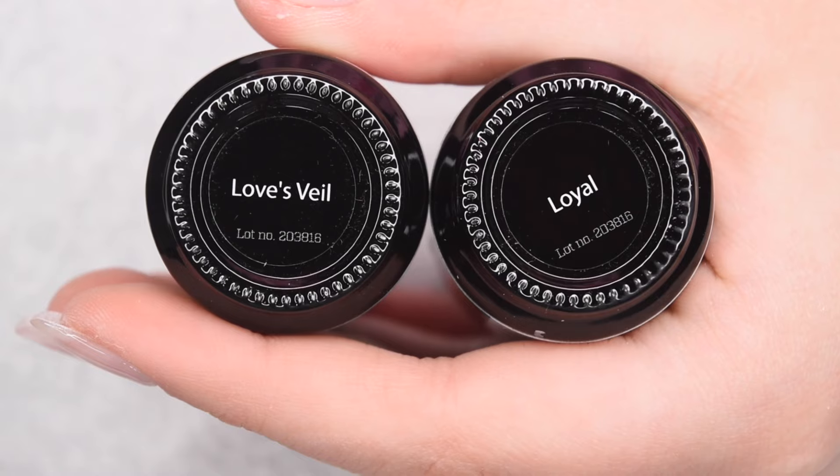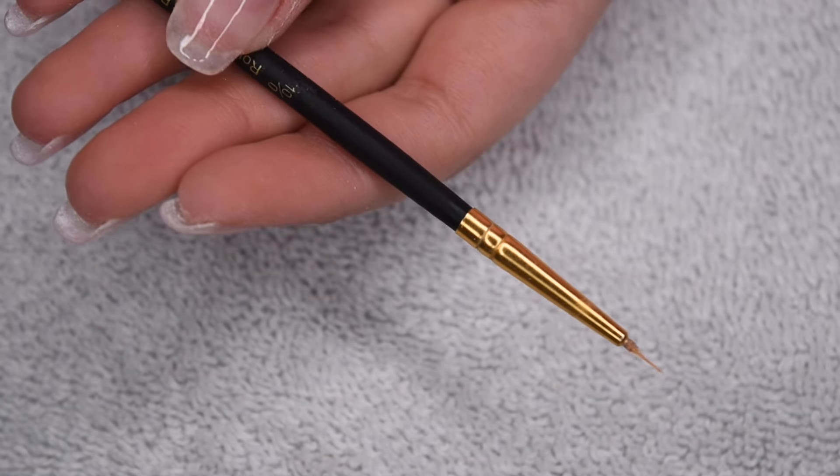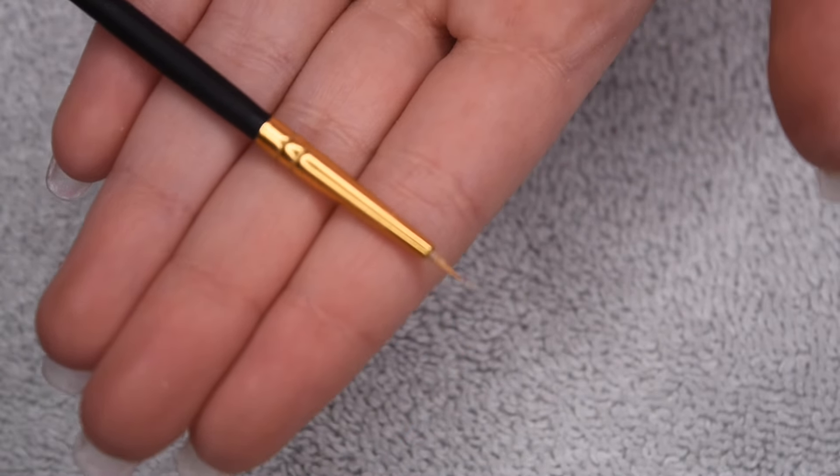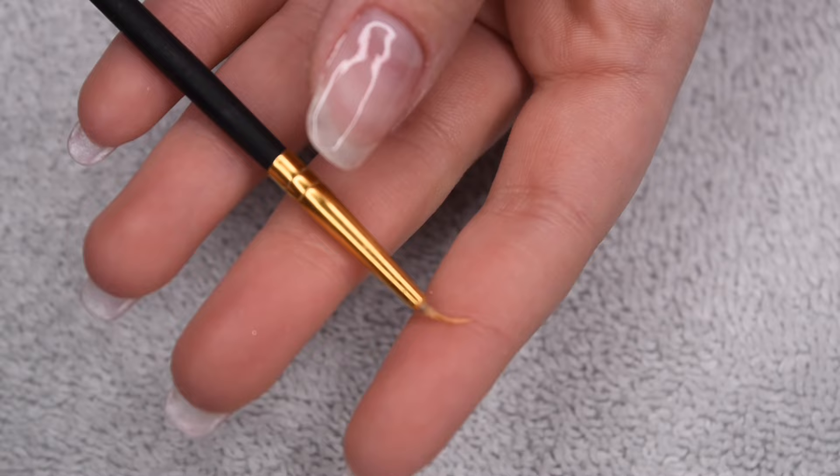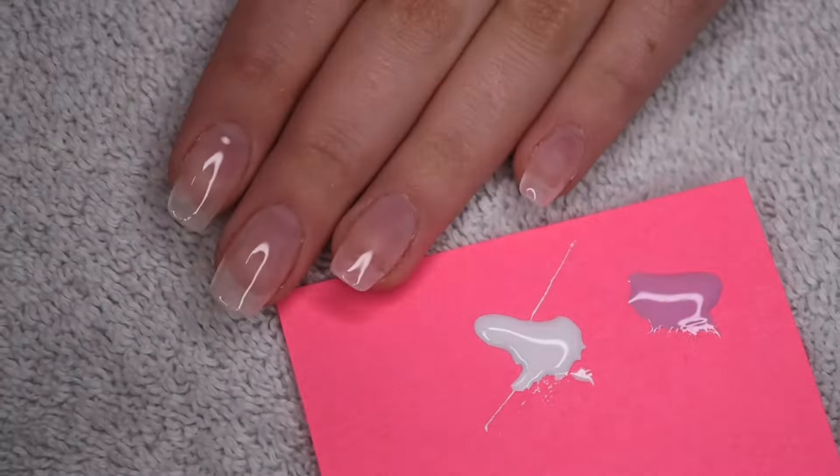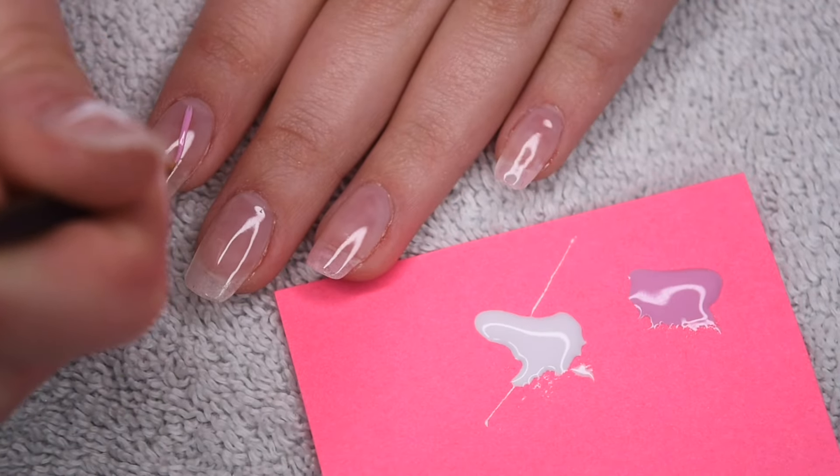Here are the two shades I'm using, Love's Veil as well as Loyal. And I will be using this super small detail brush that I actually cut from just a thinner paintbrush to get that super precise bristle brush that I needed. And then I'm just going to take out those gel colors on a post-it note so I have an easy palette to work from.